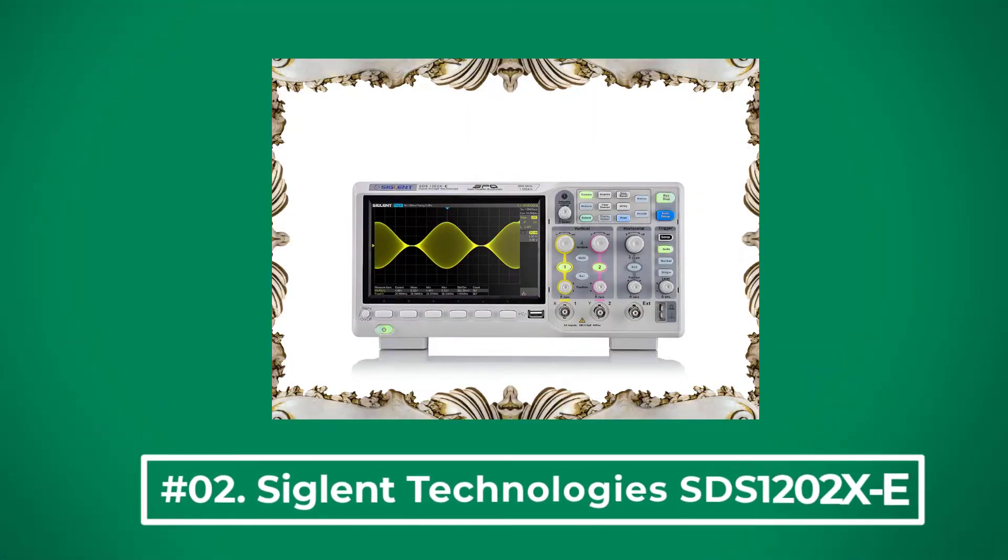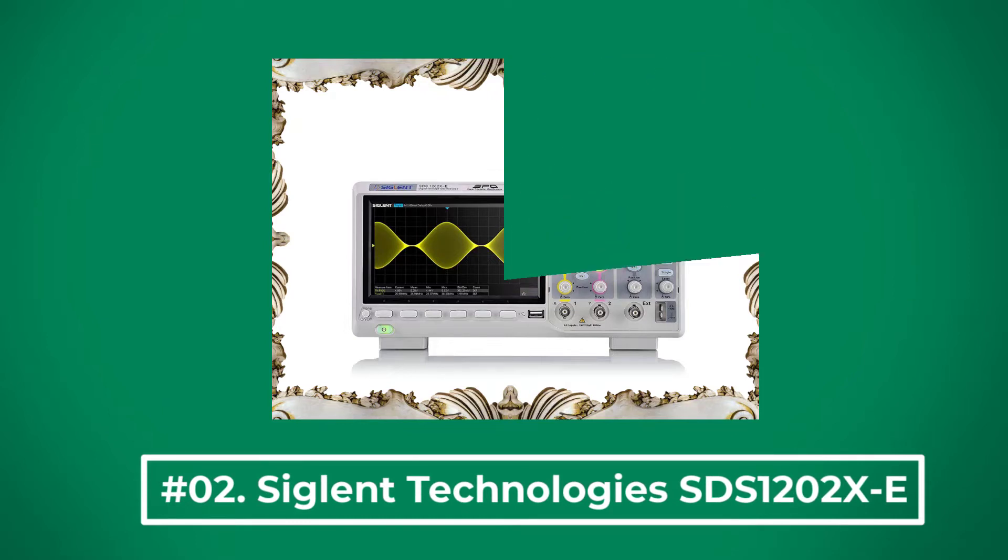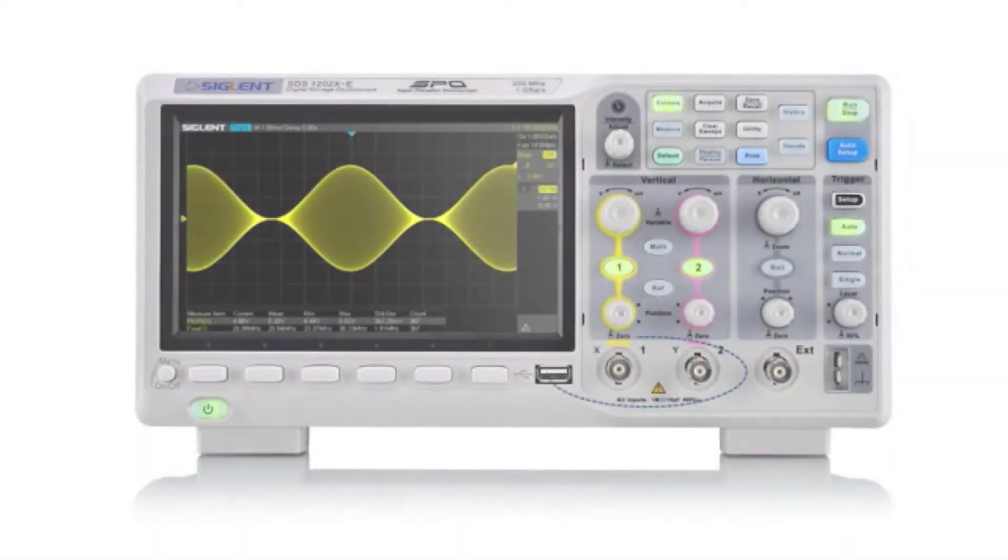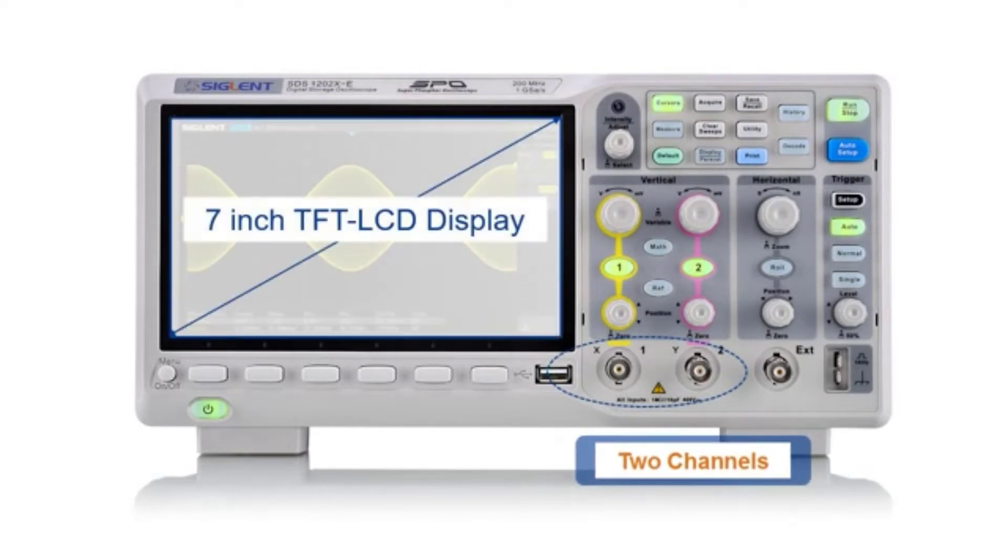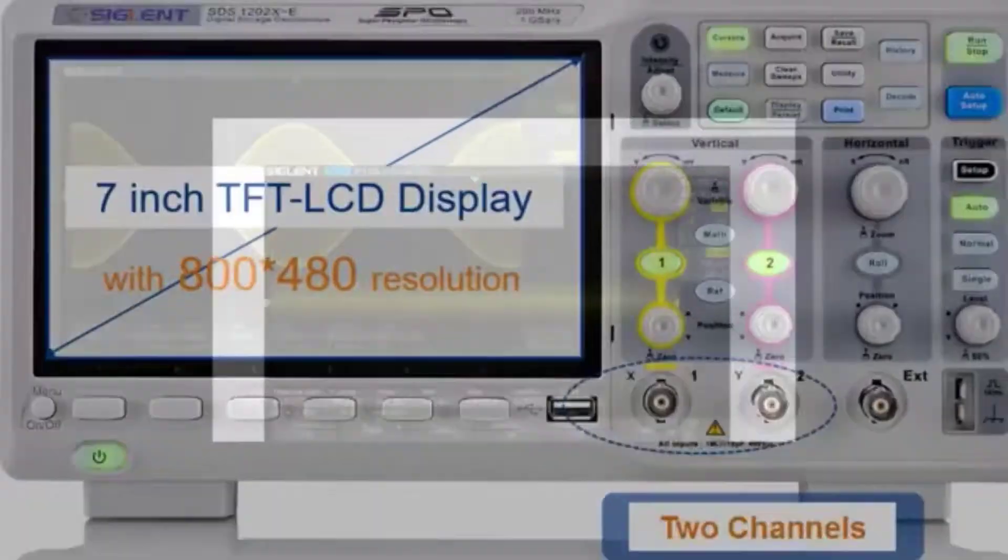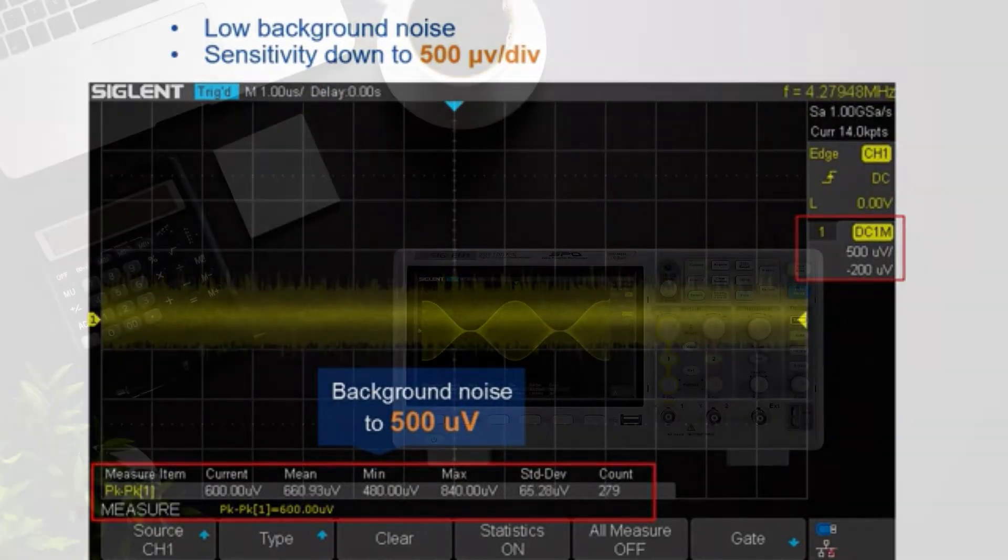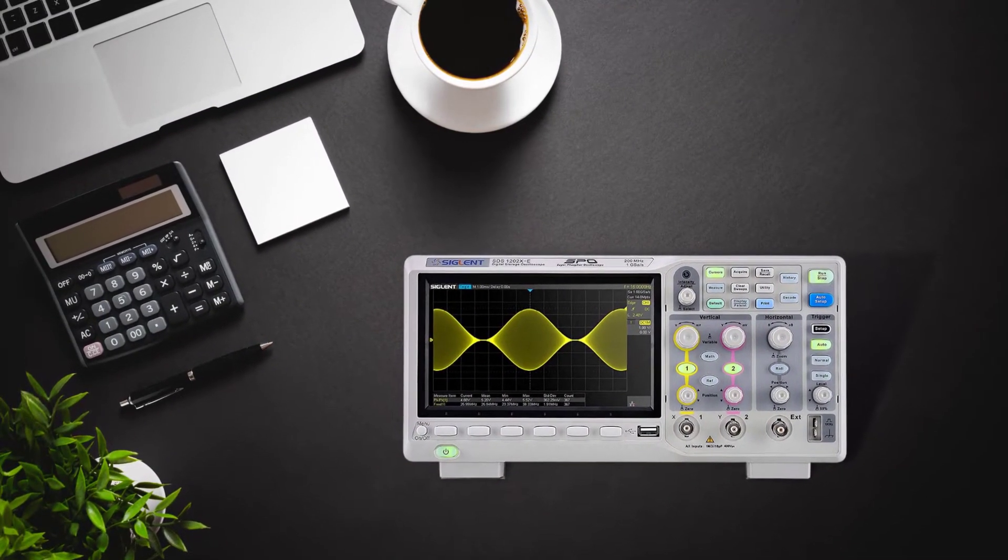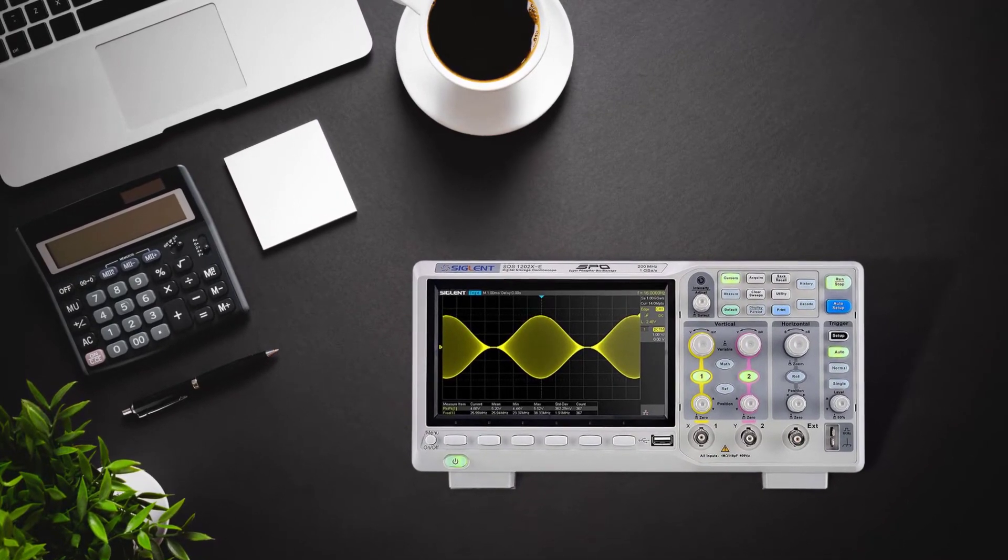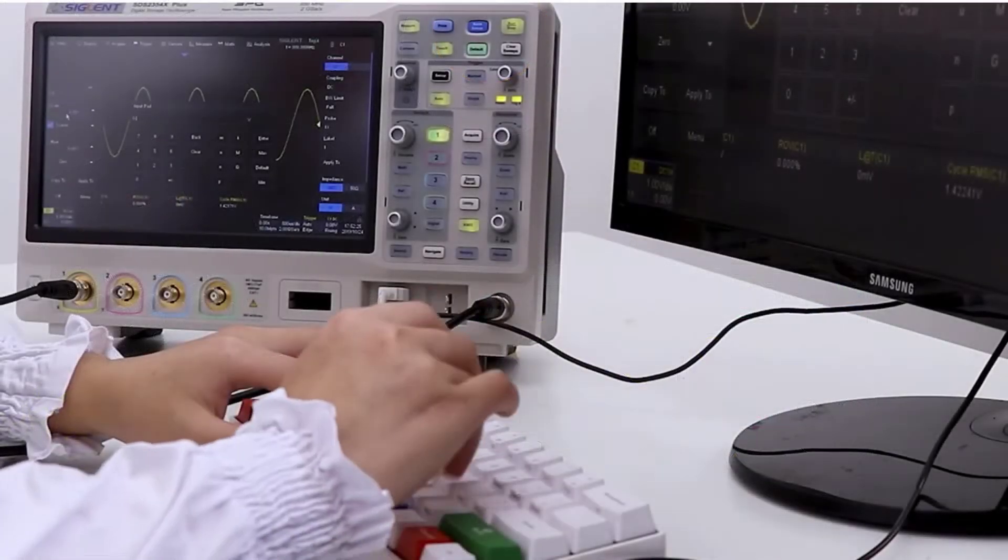At Number 2, Siglent Technologies SDS-1202XE. The SDS-1202XE is a genuinely impressive oscilloscope for under $400 when it comes to its specifications. It features 50 MHz bandwidth, sampling rate of 500 samples/s, dual-channel, interface via USB, USB host, and LAN.